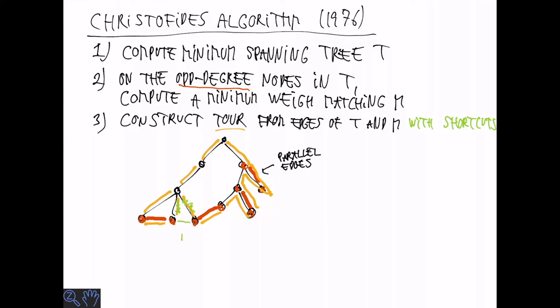However, we might have visited some nodes several times. But that's no problem because we can make shortcuts. So whenever there is a node that we visit twice, we actually get a better solution by the triangle inequality by going directly to the next node that we haven't visited. So introducing these shortcuts, and this is where we use that we have a metric, we get a tour that visits each node exactly once.